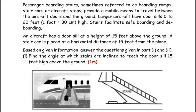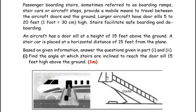These are the stairs kept near the aircraft door to help with boarding and deboarding. Larger aircraft have doors 5 to 20 feet high. Here, the aircraft door is 15 feet above the ground and the stairs are placed with a horizontal distance of 15 feet from the plane. We need to find the angle at which the stairs are inclined to reach the door at 15 feet height.